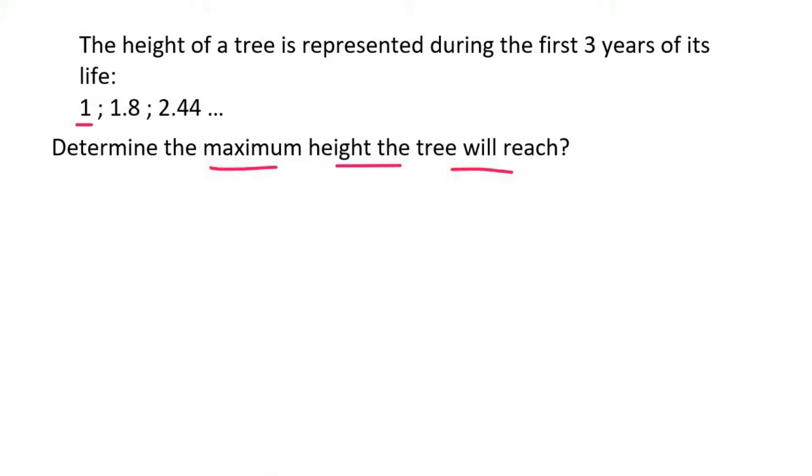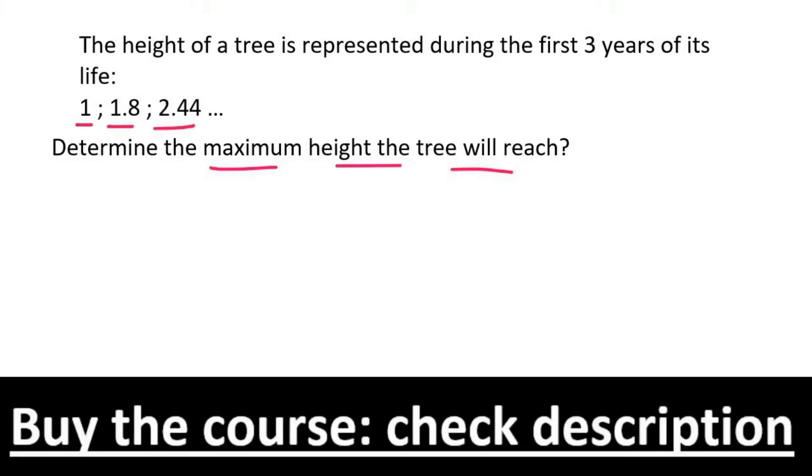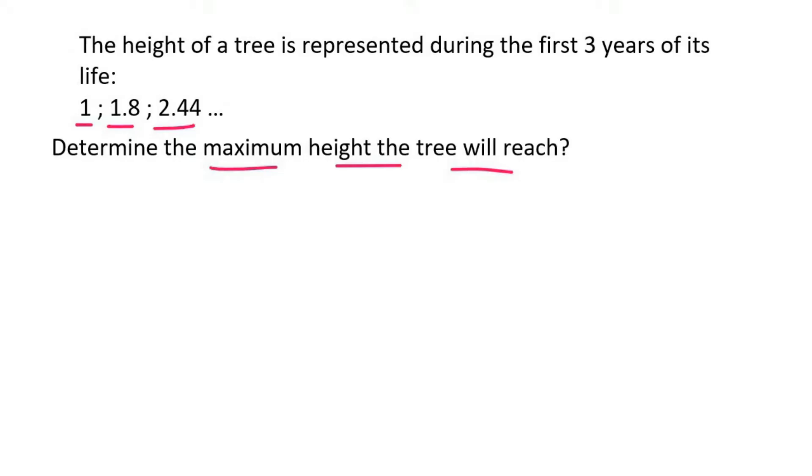Now guys, these numbers represent the height of the tree each year. So after year one, it's one meter tall. After year two, it's 1.8 meters tall. And then after year three, it's 2.44 meters tall. No matter what you do, you will not be able to form a ratio or a difference with those numbers. It just won't work.